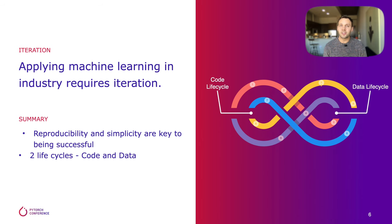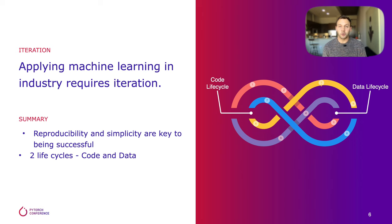The same is true in machine learning. Once we train a model and put it into production, this is only the beginning. As soon as our model begins to touch real-world data, there will be new requirements to improve the model. The first release is just the first of many. Setting ourselves up for iteration is how we apply machine learning in the real world.